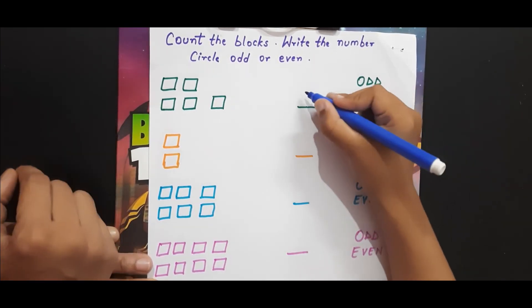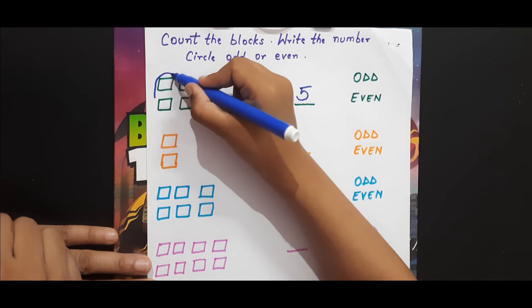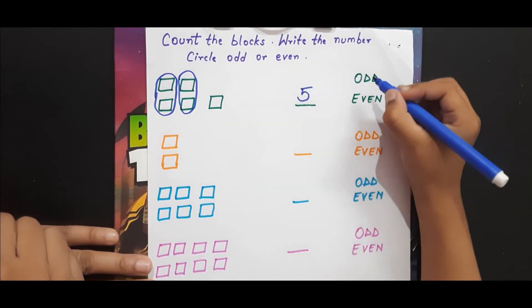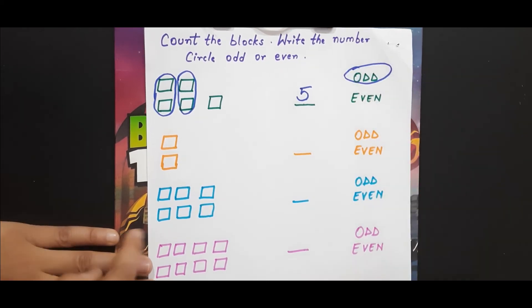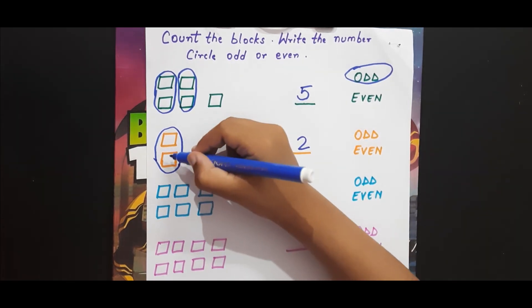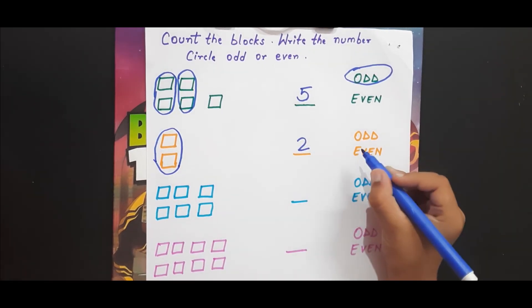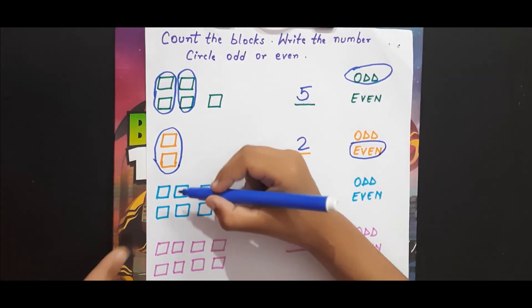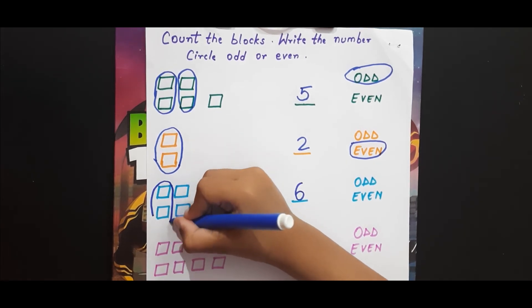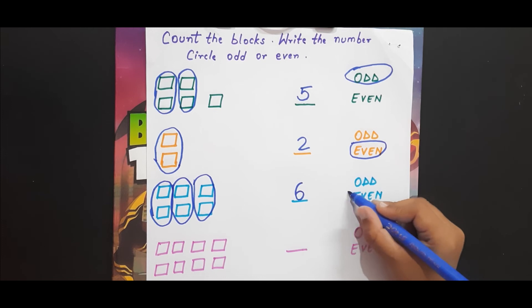Now can you identify whether five is odd or even? One pair, two pair — one is left behind. So this is an odd number — circle odd, very good! Now the second one: one, two — two makes one pair and nothing is left behind, so it is an even number — circle even, good job! One, two, three, four, five, six — is six odd or even? One pair, two pair, three pair — nothing is left behind, so it is an even number. Good job!